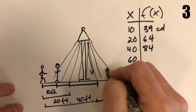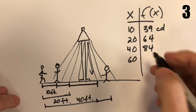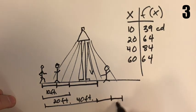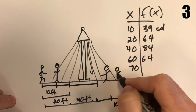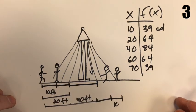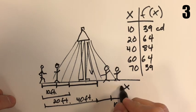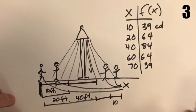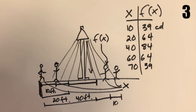After 60 feet the light starts to decrease again, back to 64 candelas. At 70 feet total we're back down to 39 candelas — there's some symmetry here as you might expect. So if x is the distance that this person is walking from the left edge and f(x) is the luminous intensity at the top of their head as they walk, that's our scenario.